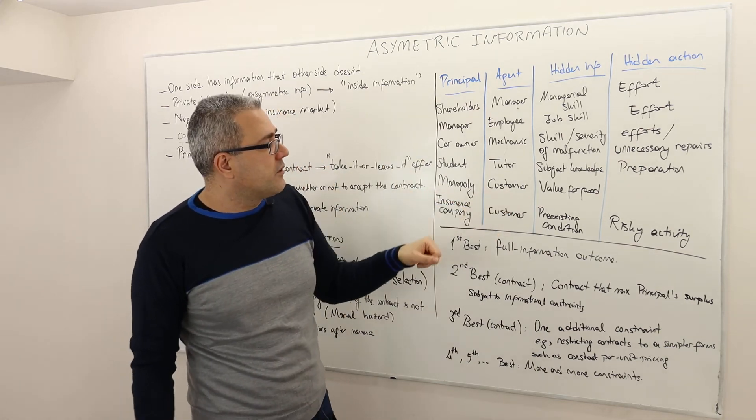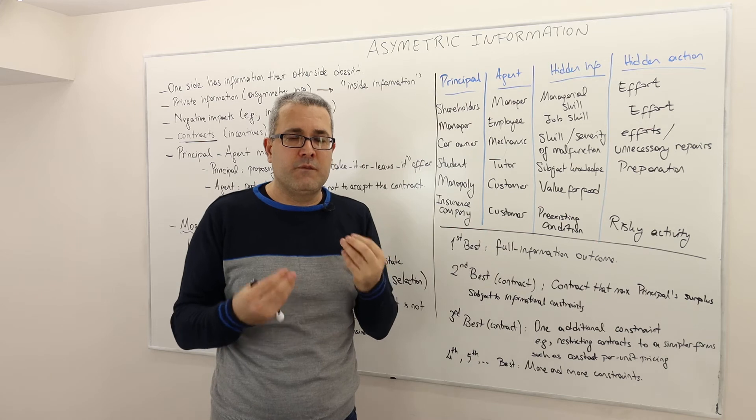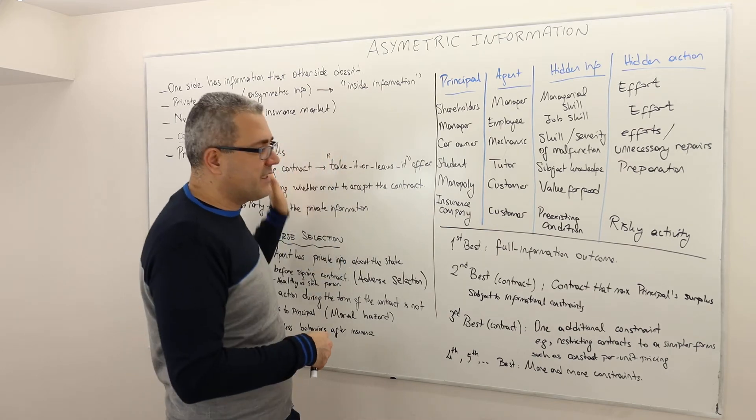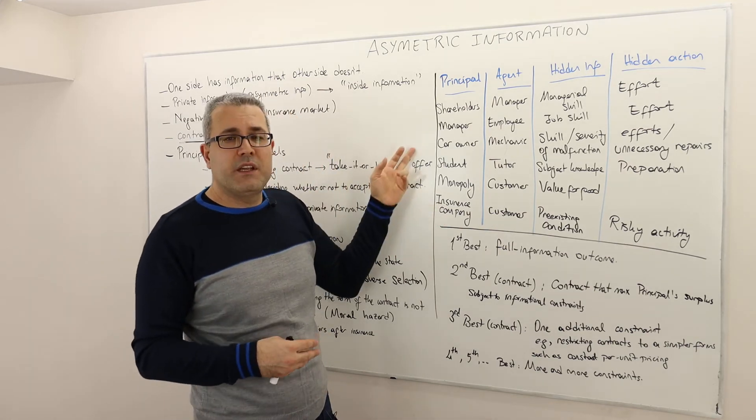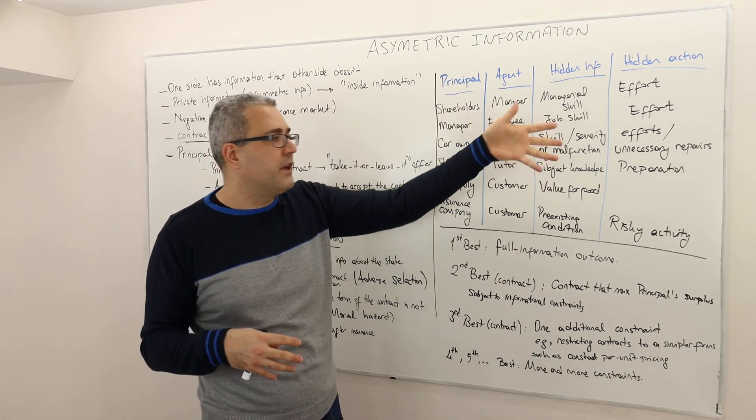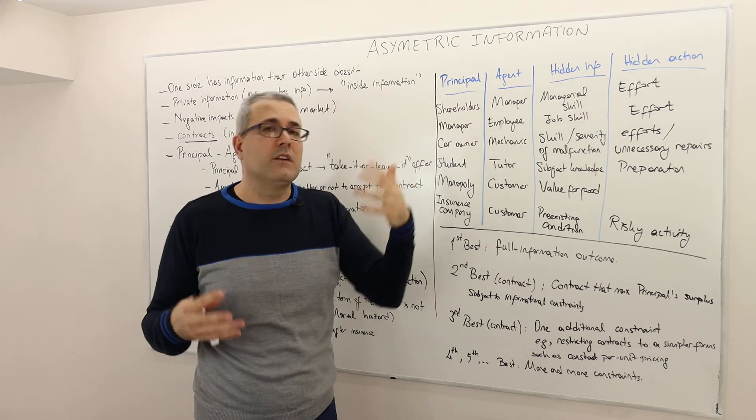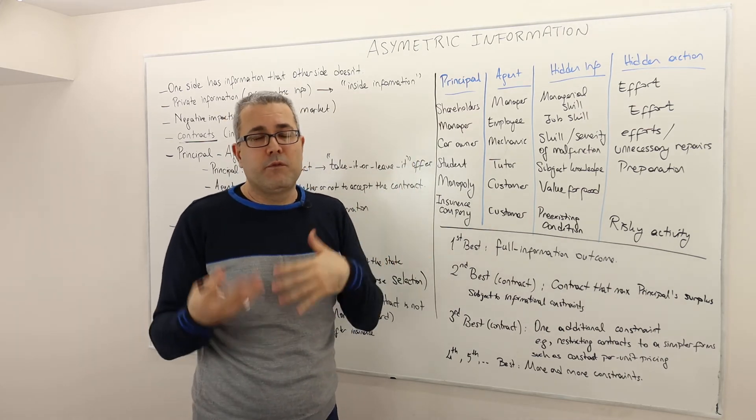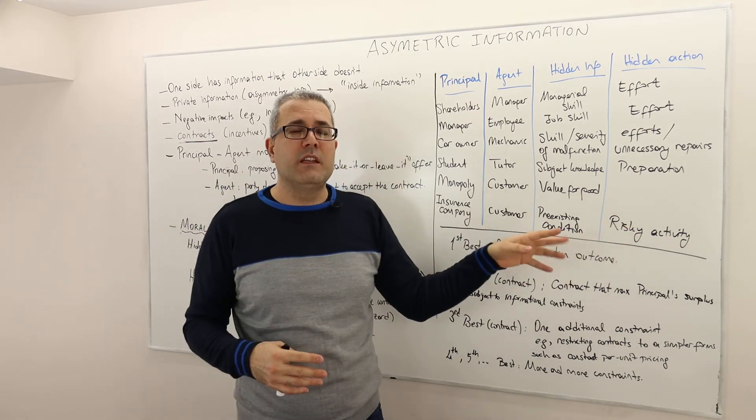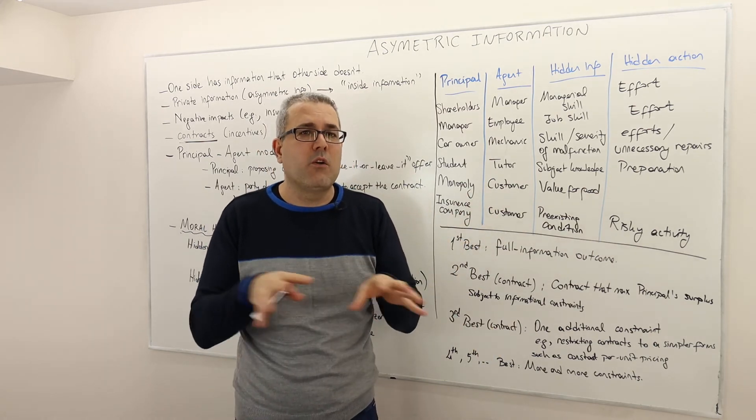Or it could be the monopoly and the customer. The monopoly is the principal, customer is the agent. So how much this customer values for this good, meaning his willingness to pay, may be a hidden information. Or the same example I keep repeating, the insurance company is the principal, customer is the agent. And the pre-existing health conditions may be the hidden information, and the risky activities, for example, once you get a life insurance you start climbing mountains, you start bungee jumping, but before the health insurance or life insurance you were not doing this. And so you may actually not observe all the actions that the agent is taking. So once you design a contract, you have to take all these into consideration.